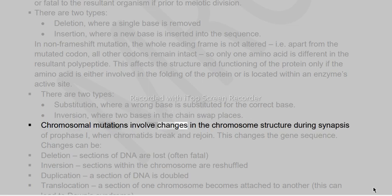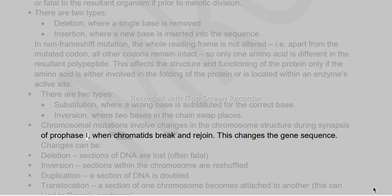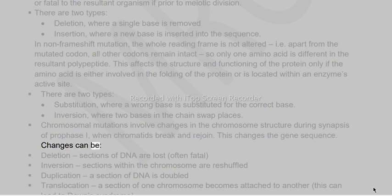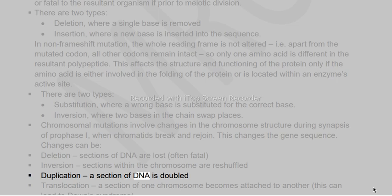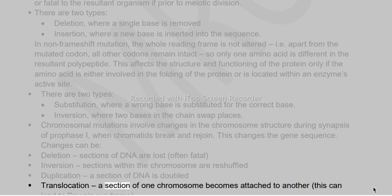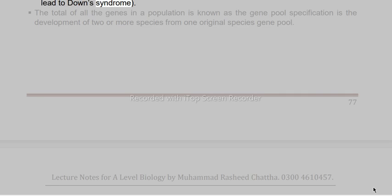Chromosomal mutations involve changes in the chromosome structure during synapses of prophase I, when chromatids break and rejoin, changing the gene sequence. Changes can be: deletion (sections of DNA are lost, often fatal), inversion (sections within the chromosome are reshuffled), duplication (a section of DNA is doubled), or translocation (a section of one chromosome becomes attached to another, which can lead to Down syndrome).